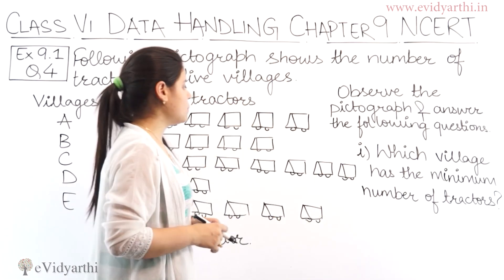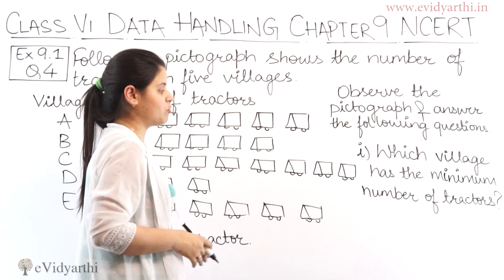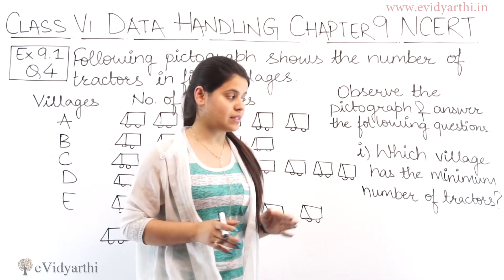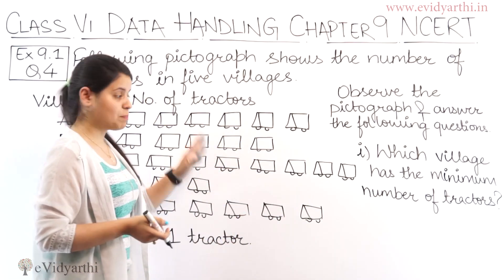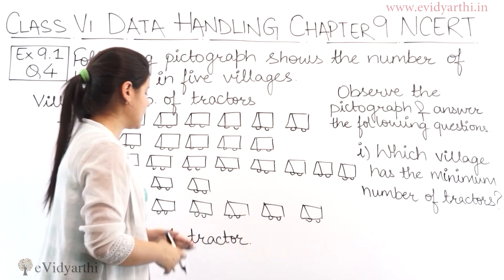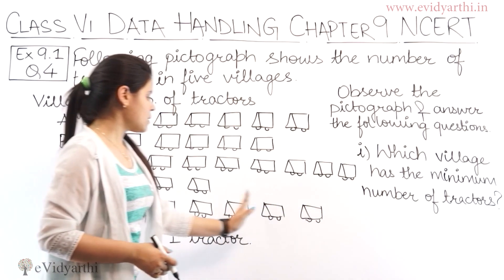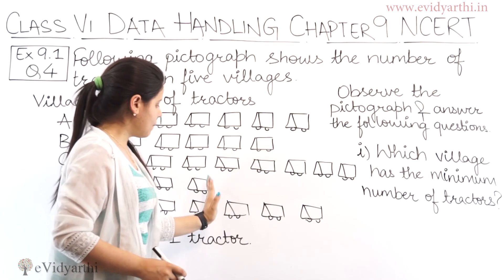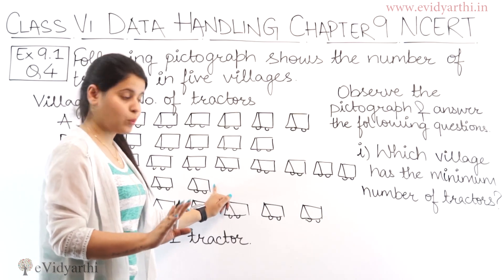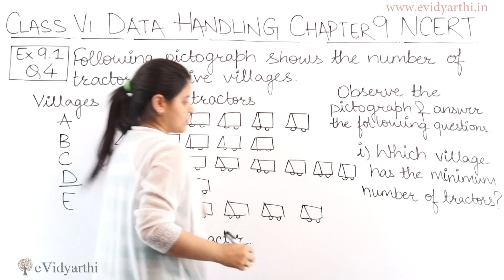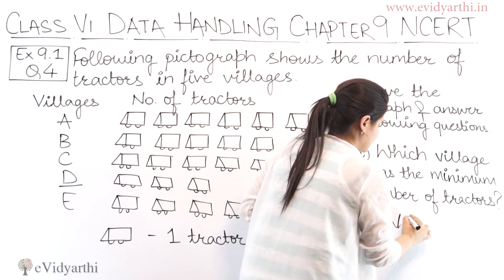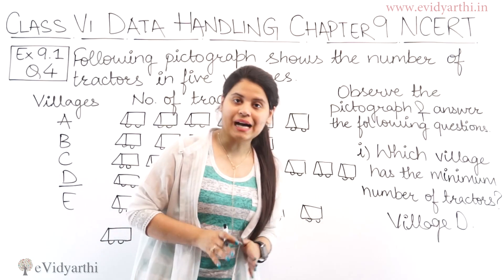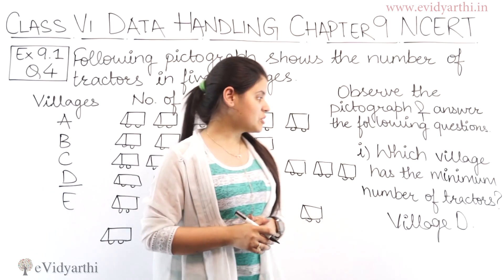The first part asks: which village has the minimum number of tractors? If you look at the pictures, whichever has the fewest tractor symbols — that is village D. So village D has the minimum number of tractors.